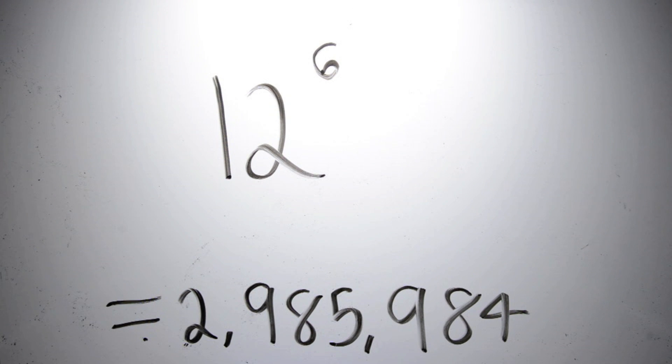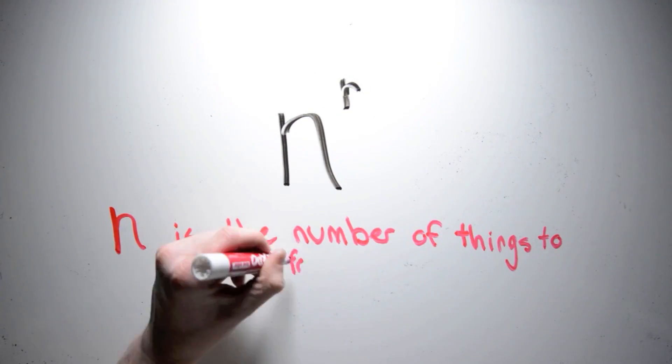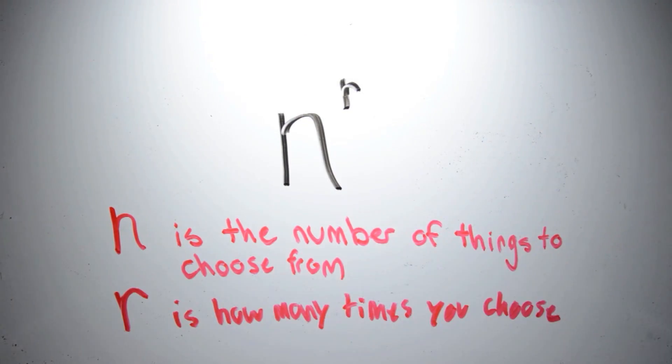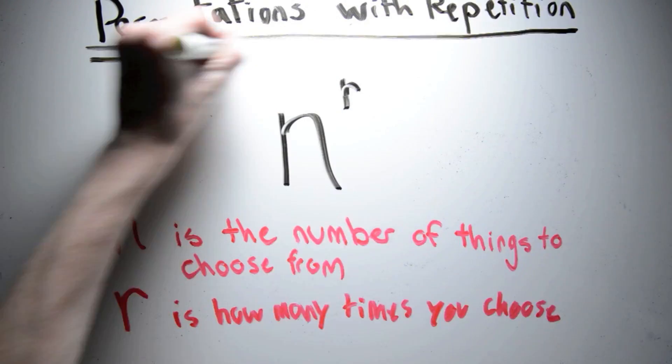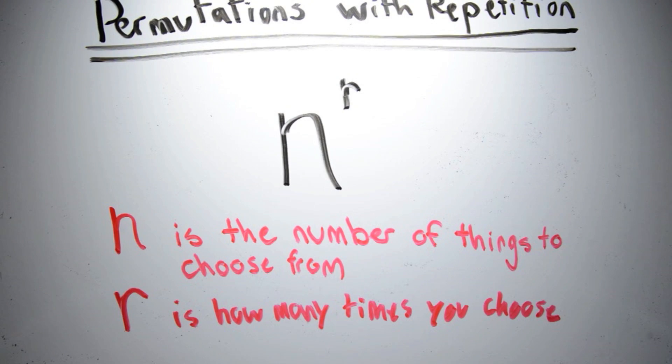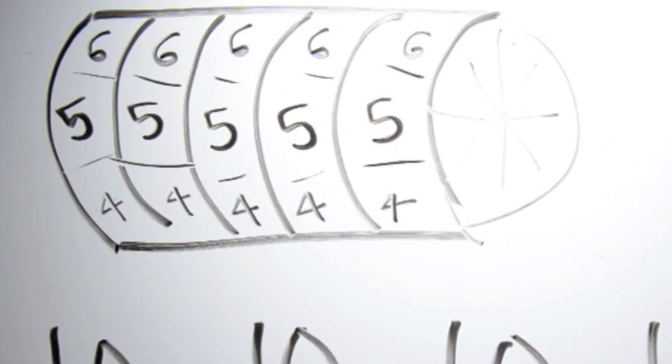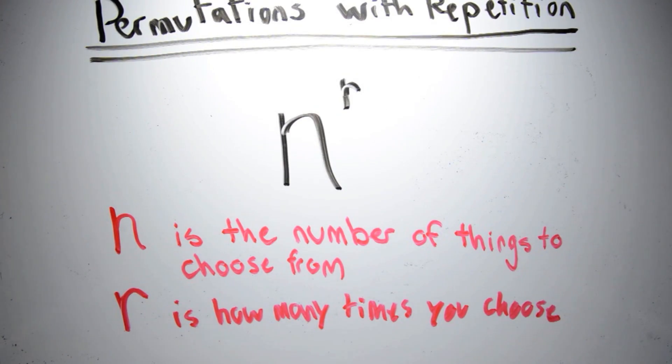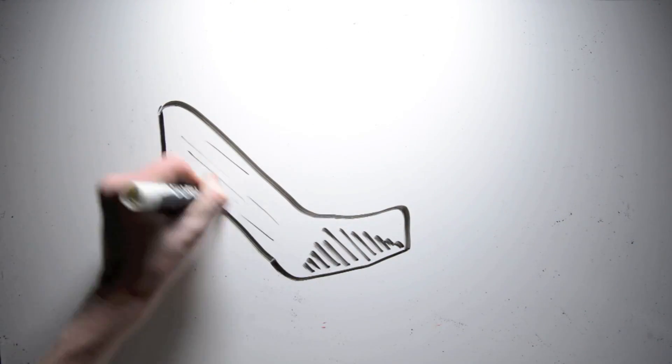To be able to put in any number we want, we can write this as a formula with variables. N is the number of things to choose from, and R is how many times you can choose. This is called a permutation — specifically a permutation with repetition. It has repetition because, like in the lock example, we're able to choose the same number more than once. But what if, once we choose a number, we can't do it again?